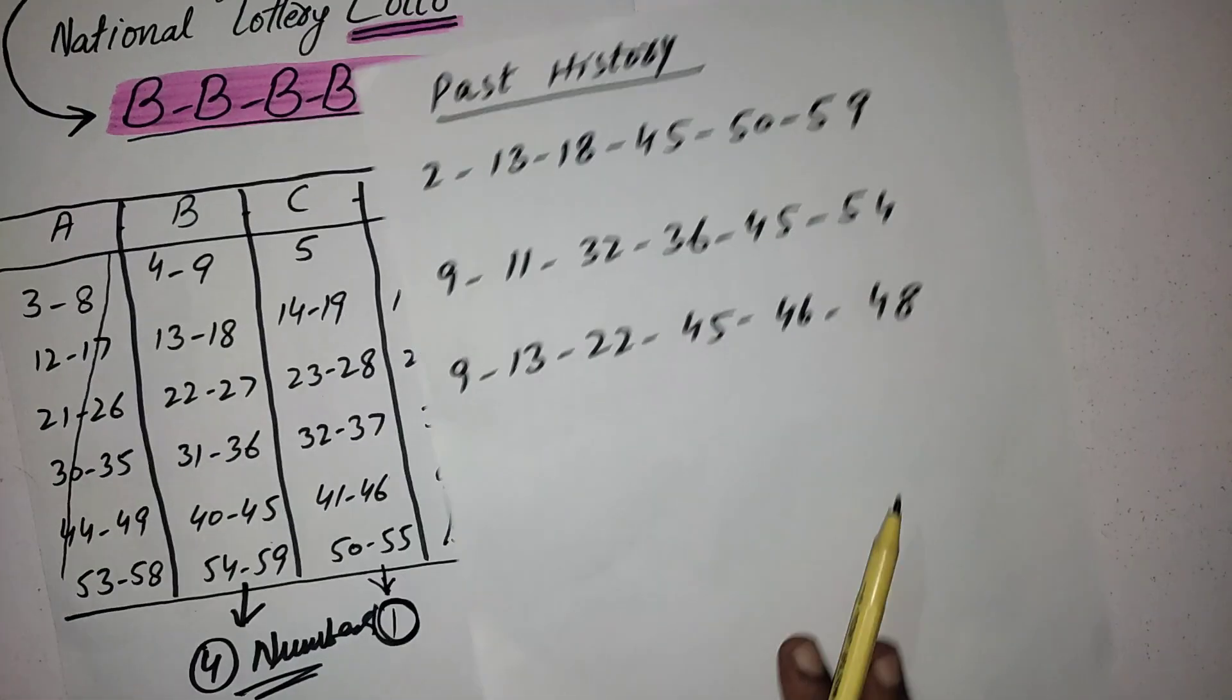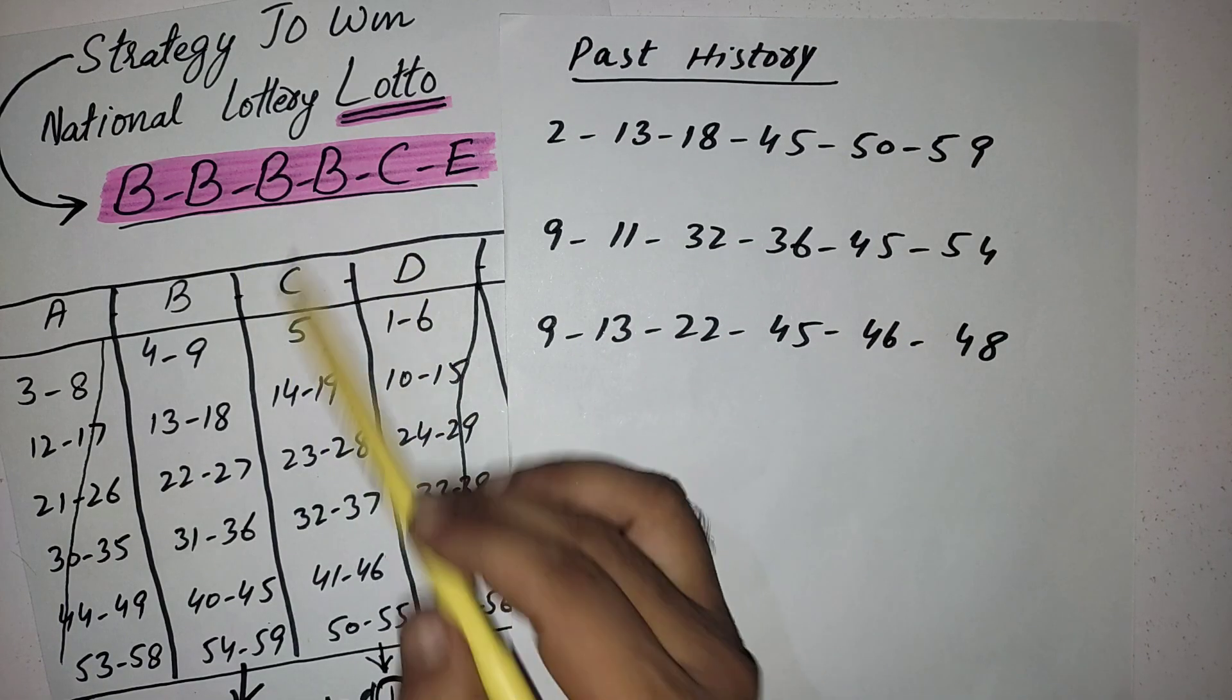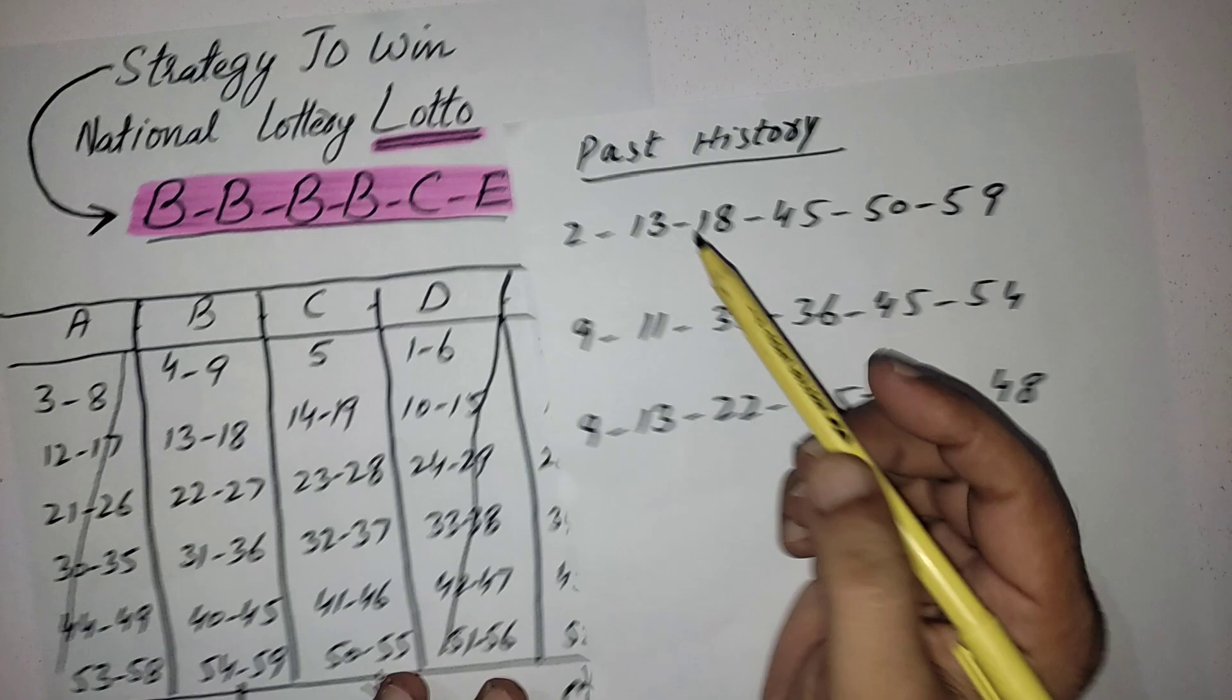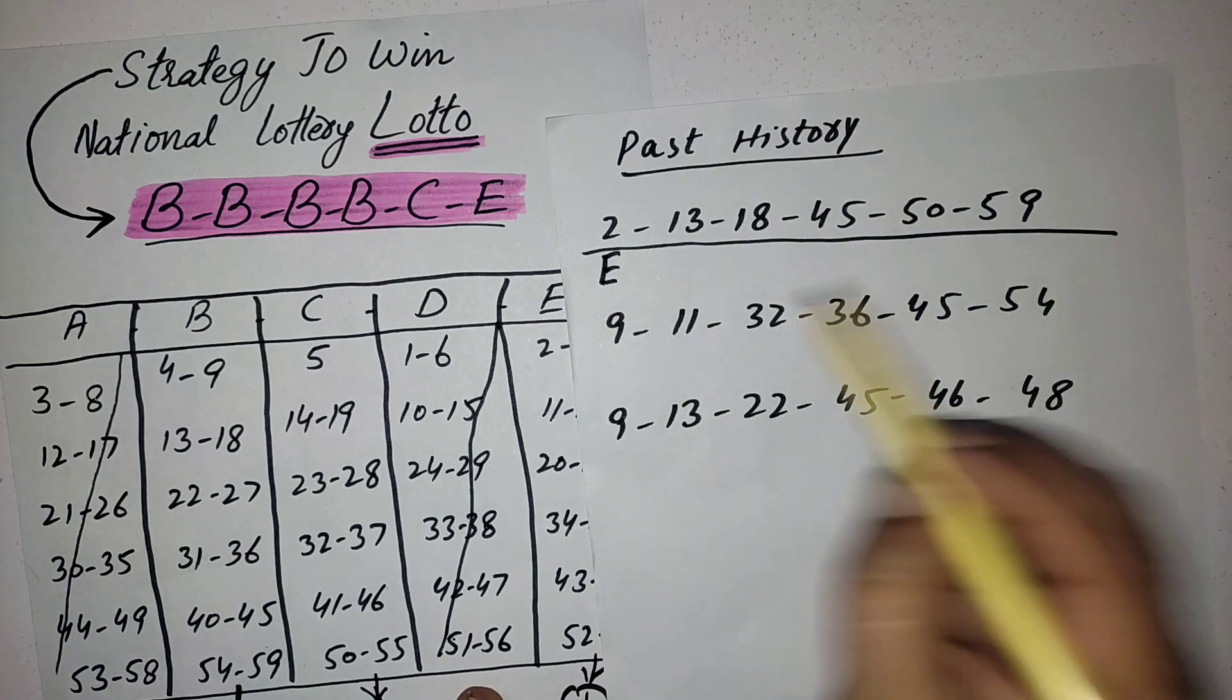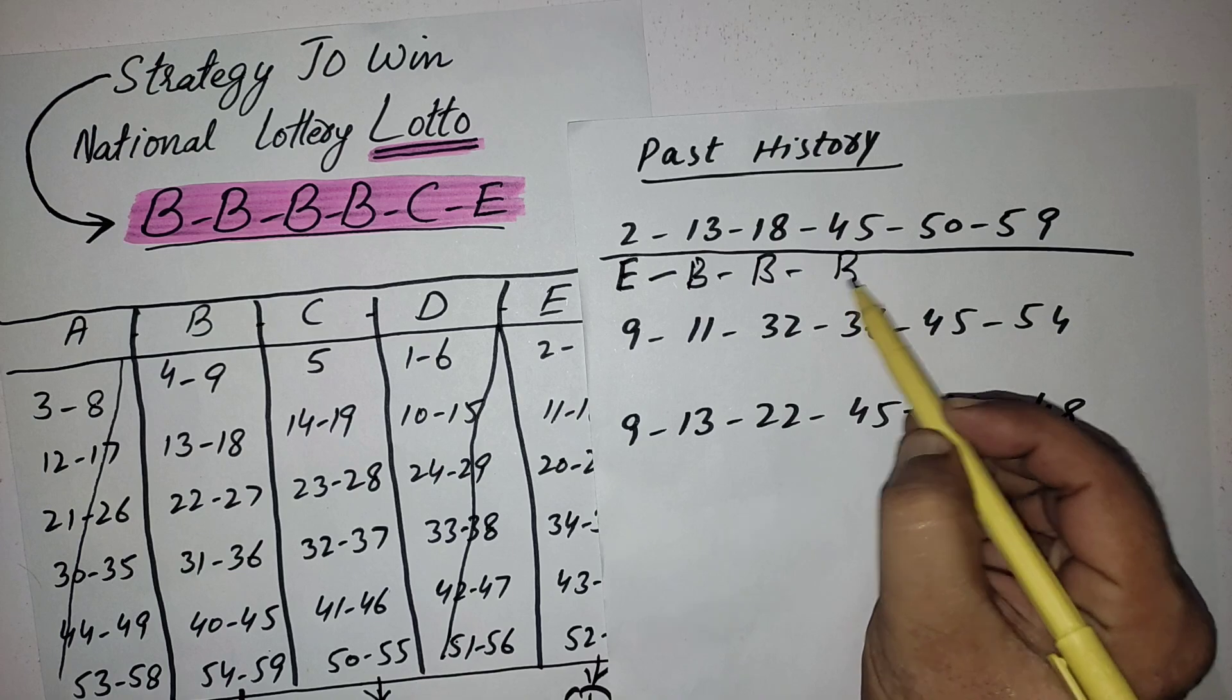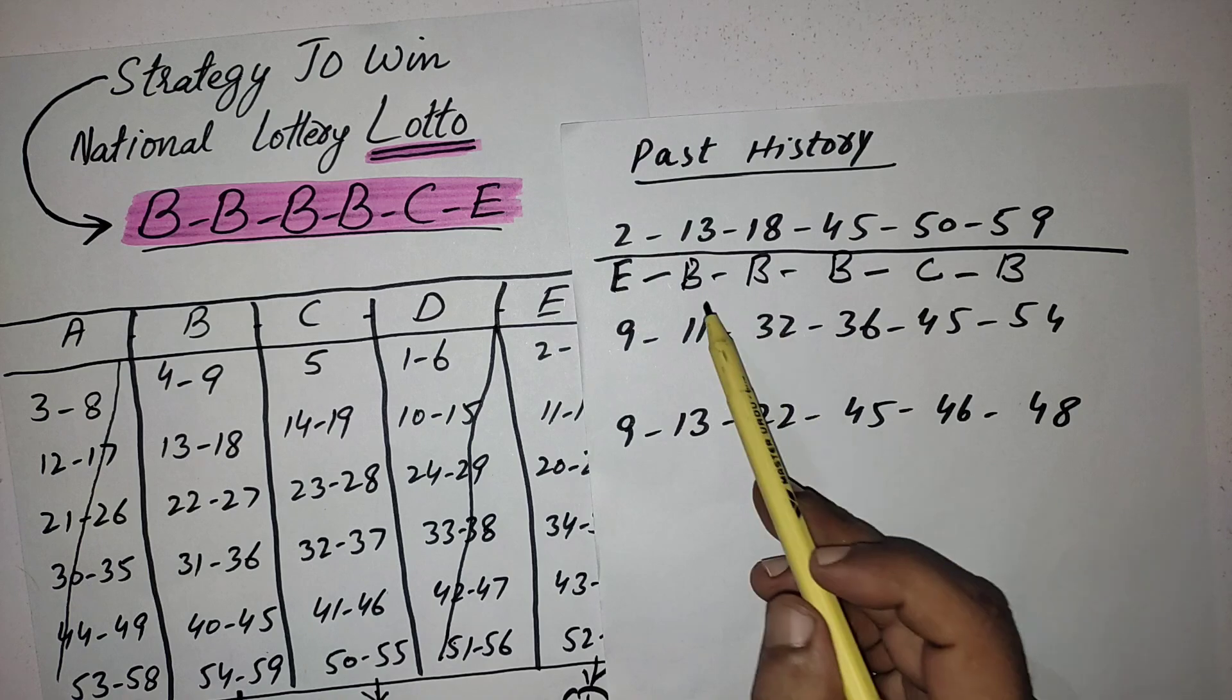And these are the past results, latest past results. The numbers came according to this strategy: four numbers from B category, one number from C, and one number from E. You can see two from E category, 13 from B, 18 from B, 45 from B, 50 from C, and 59 from B.